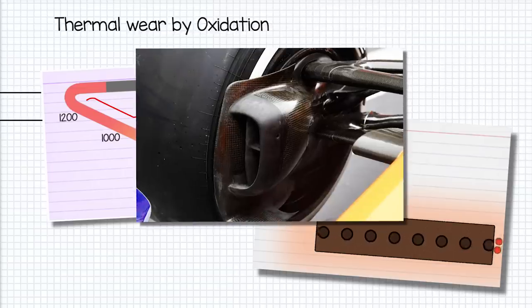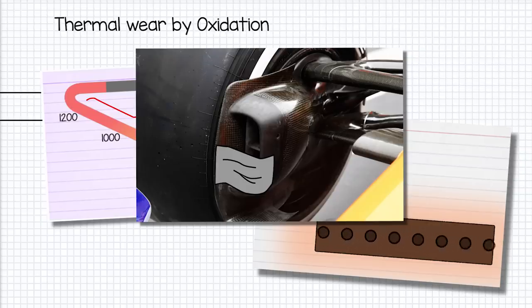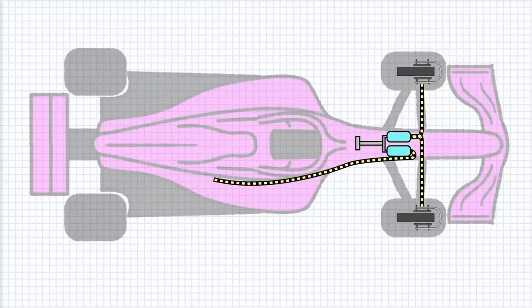You'll often see engineers blanking off brake ducts with, aptly, duct tape if the ducts seem to be feeding too much air into the brakes either temperature or degradation wise. So that's the simple end of the braking system. The front brakes are powered by a simple, straightforward hydraulic system.